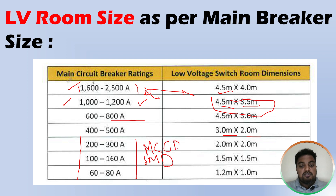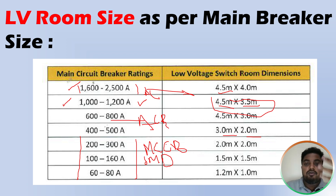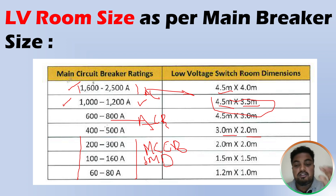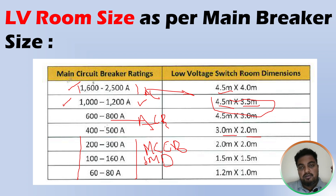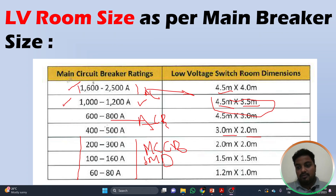If the incoming is 800A or more, the device will be an ACB. This is an extra detail but you must also consider this in your single-line diagram. I hope you found good information about LV room sizing and calculations. Please subscribe to our channel for more videos. Stay tuned — thank you.